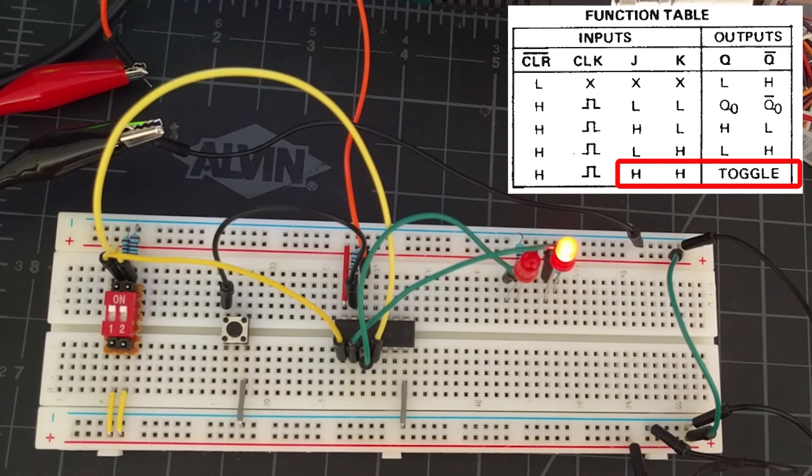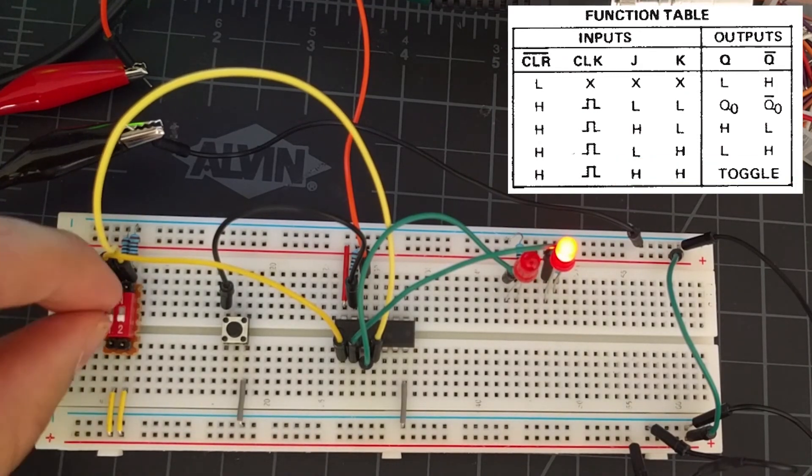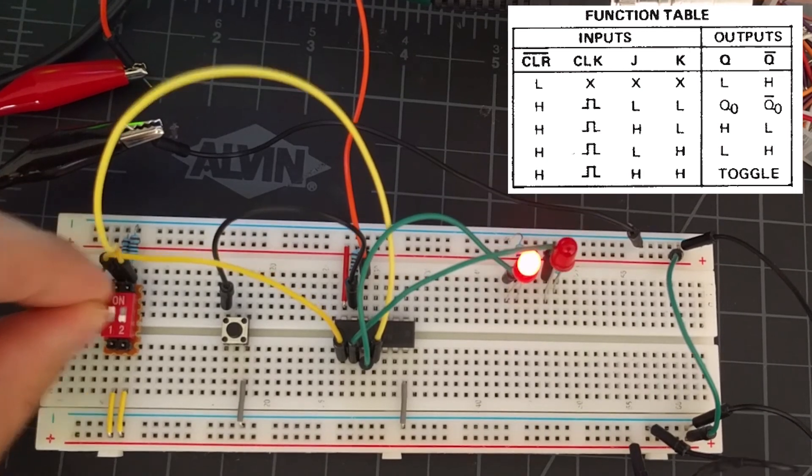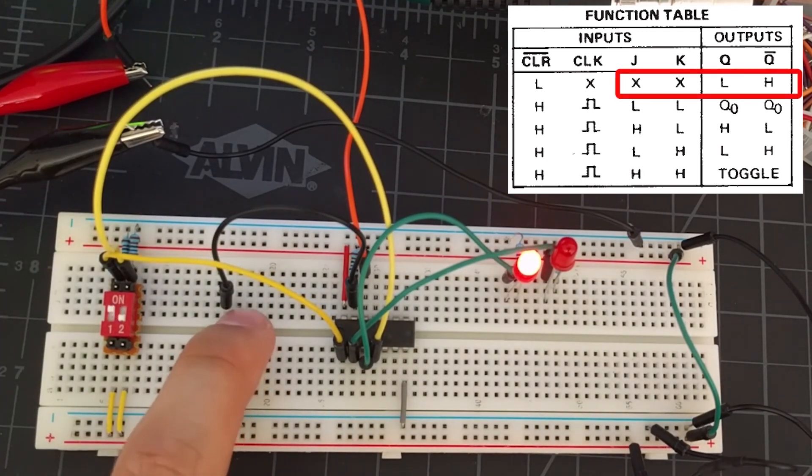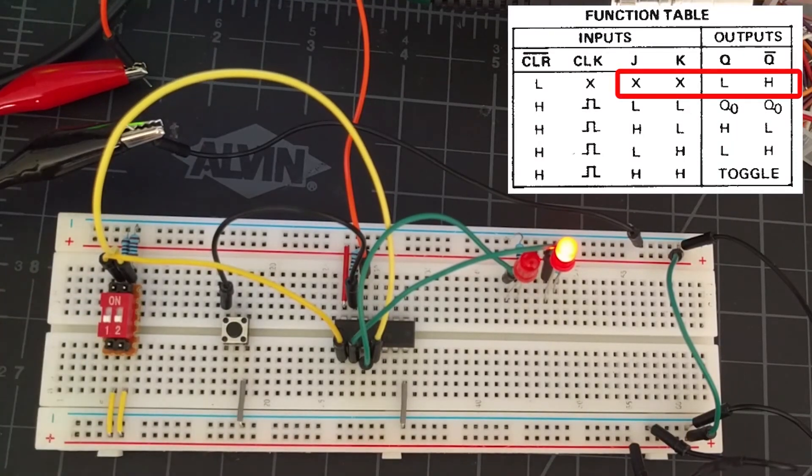The clear button works by overriding the J-K inputs and always outputting Q to be low. For example, let's put J high so that way Q becomes high. If we press the clear button, Q will be set to low regardless of the J or K inputs.